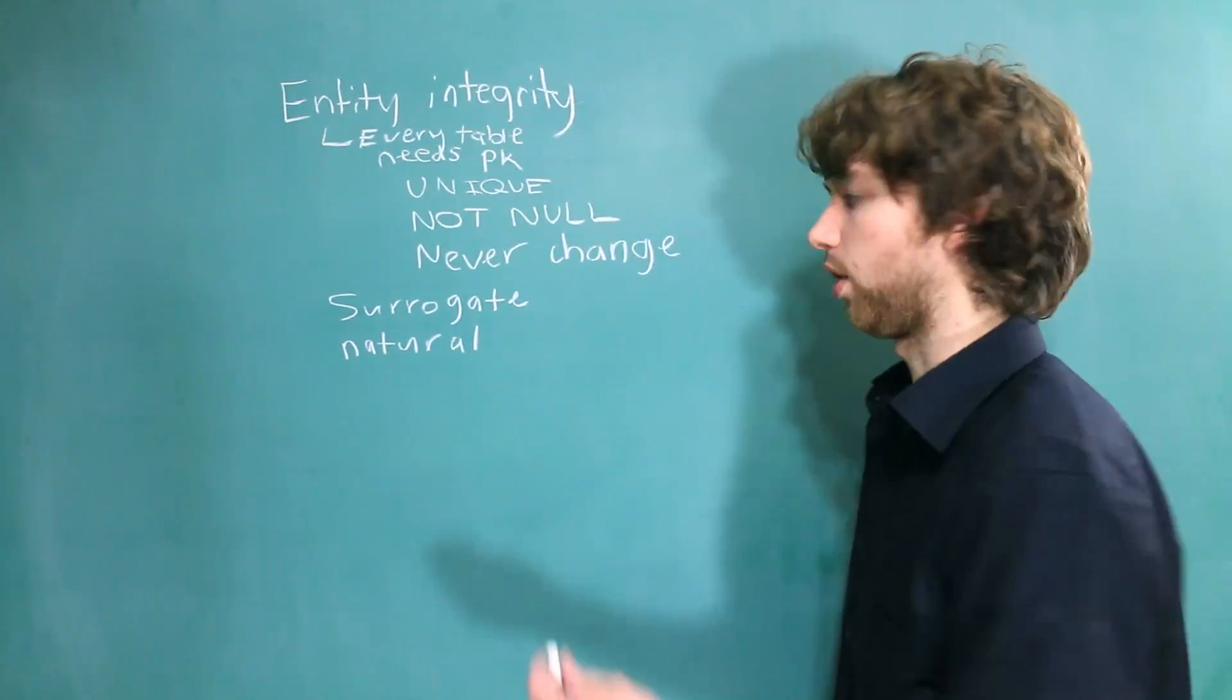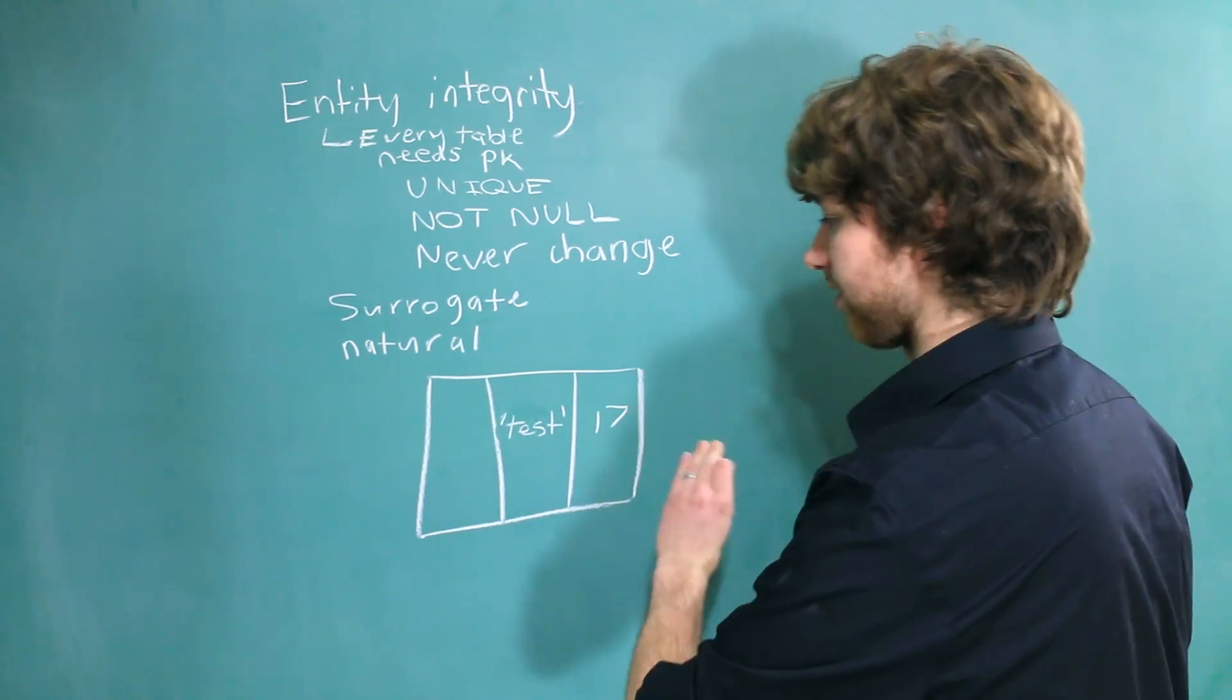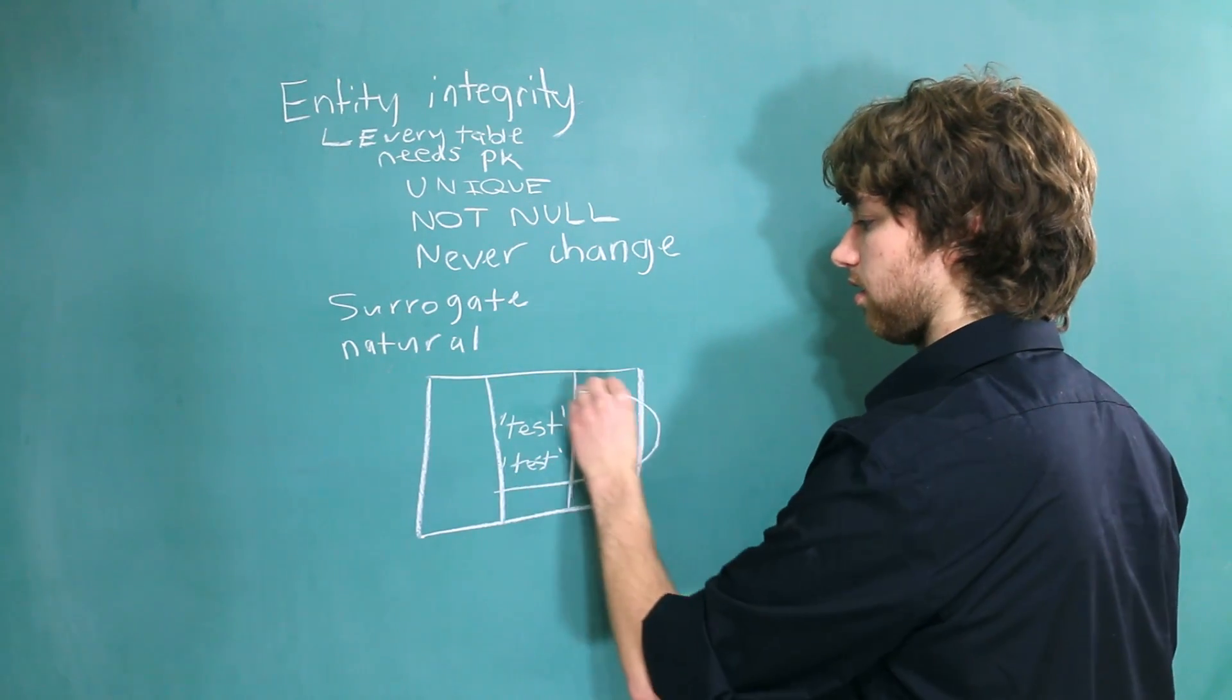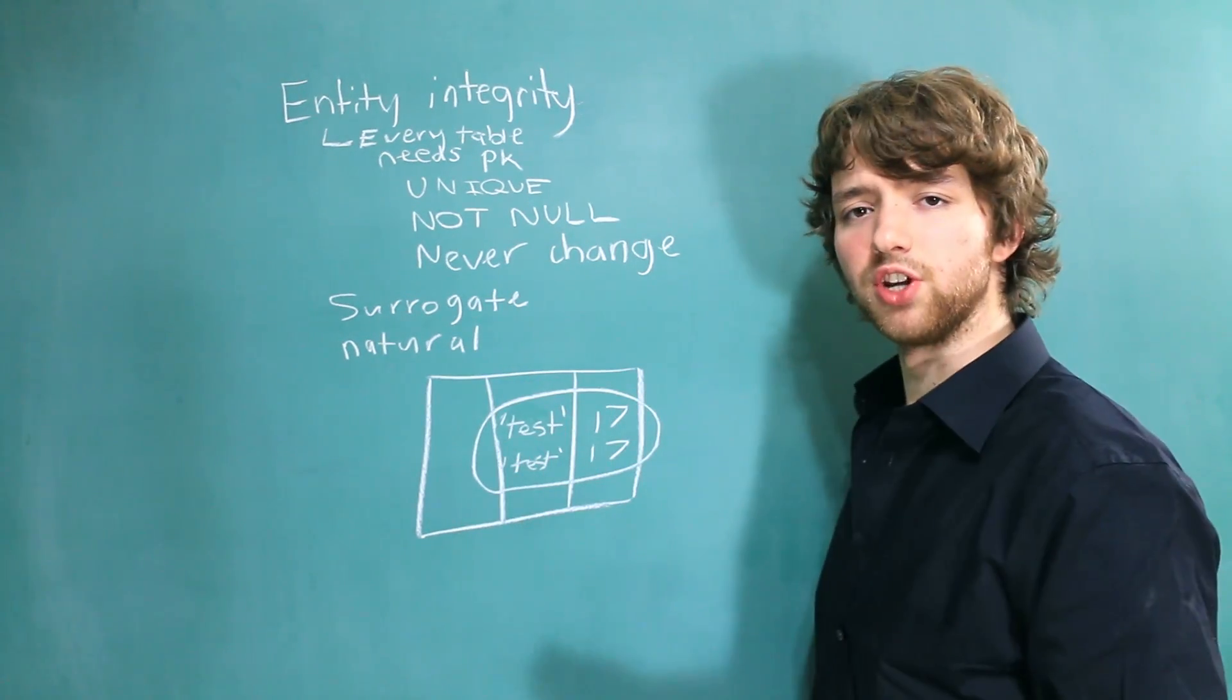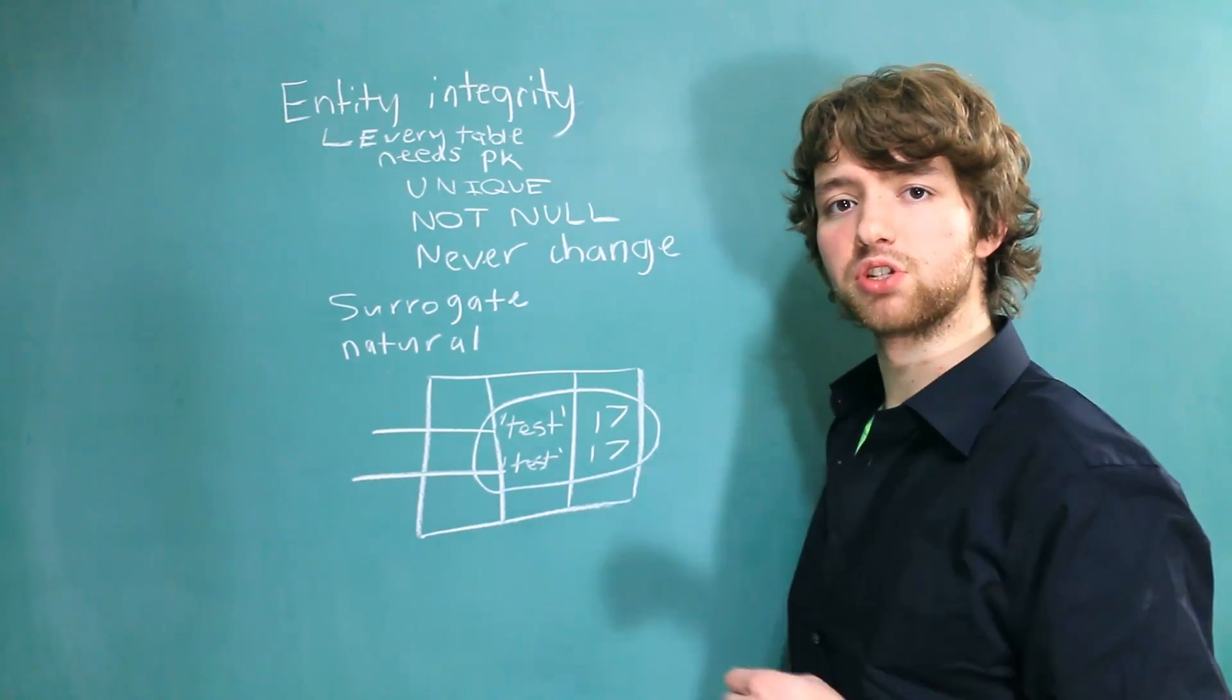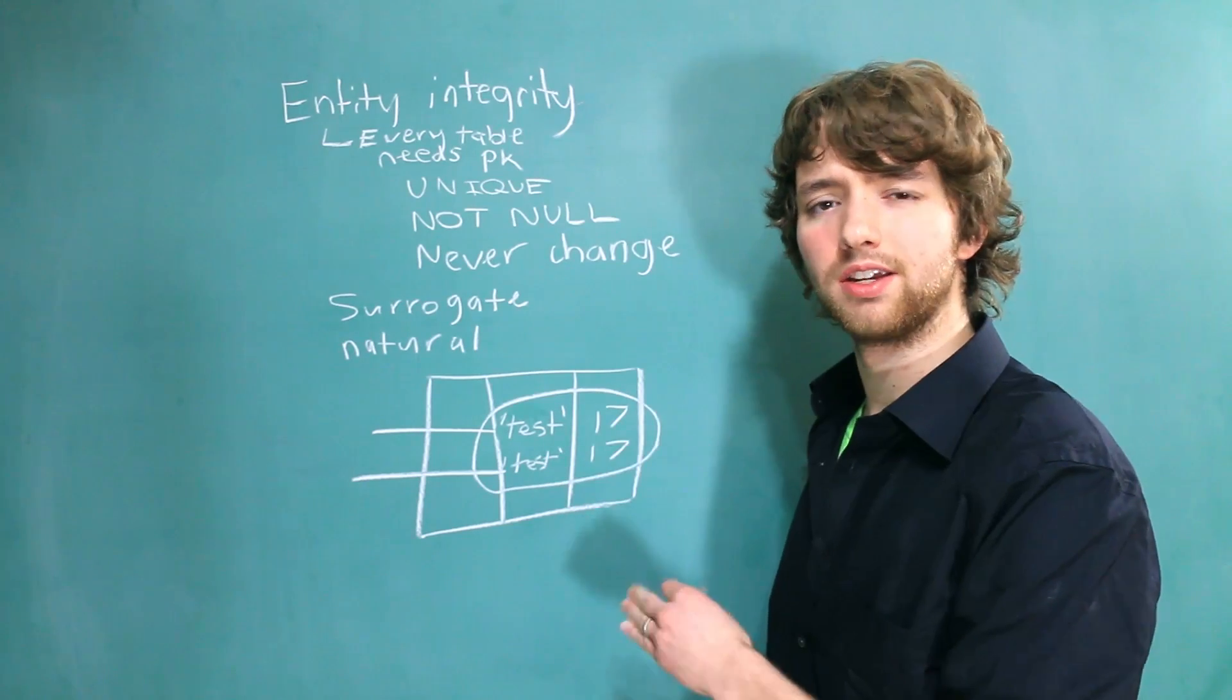Why is having a key so important? Well if you have a table, and it doesn't matter what the columns are, let's just say that's a row, and then we have another row, and you can see this is duplicate data. And this brings up the question: do we have two entries that are supposed to be different, or is this the same entry in there twice? It's kind of confusing.